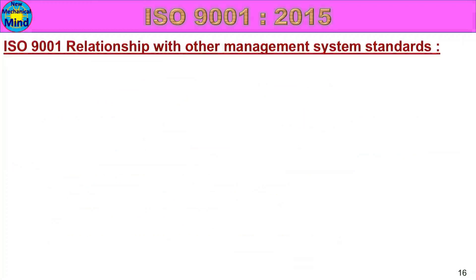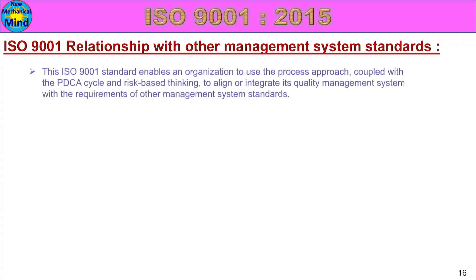ISO 9001 Relationship with Other Management System Standards: this ISO 9001 standard enables an organization to use the process approach coupled with the PDCA cycle and risk-based thinking to align or integrate its quality management system with the requirements of other management system standards.